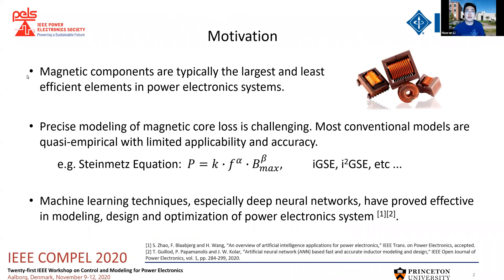As we know, magnetic components such as inductors and transformers are typically the largest and least efficient part in power electronic systems, and precise modeling of magnetic loss, especially the core loss, is challenging. Most conventional models are quasi-empirical, where the applicability and accuracy is really limited.